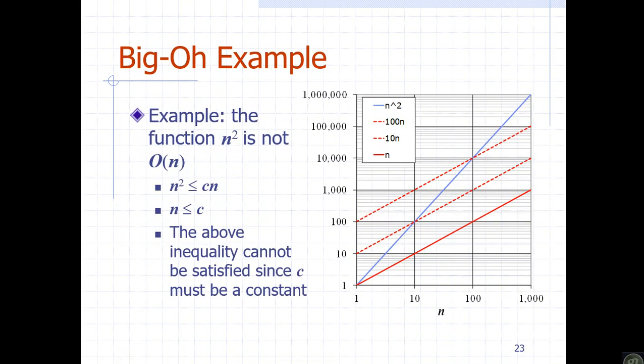Another example: n squared is not Big O of n. If n squared were an upper boundary of n, that would be a wrong statement. We cannot find a constant c such that n squared is less than or equal to c times n for all large n. Therefore, n squared is not Big O of n.